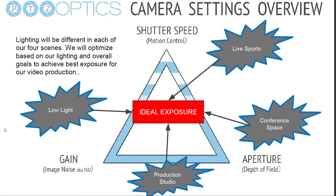Let's look at which camera settings are most important in which areas. Lighting will be different for each of the four main scenarios. For live sports, shutter speed and aperture are going to be most important. In low light situations, shutter speed and gain are more important. In broadcast, getting the ideal exposure could take all three. In conferencing spaces, people normally like to use automatic settings.